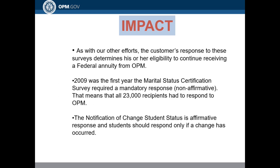Regarding the impact: as with our other efforts, the customer's response to these surveys determines his or her eligibility to continue receiving a federal annuity from OPM. In 2009, the first year the marital status certification survey required a mandatory response, all 23,000 recipients had to respond to OPM regarding that year and continuing. The notification of change in student status is an affirmative response, and students should respond only if a change had occurred.